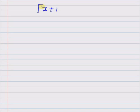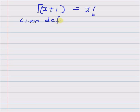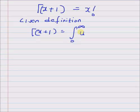In this short video I will demonstrate that the gamma function of an integer x plus 1 is equal to x factorial. Given the definition: gamma(x+1) equals the integral from 0 to infinity of u^x times e^(-u) du.